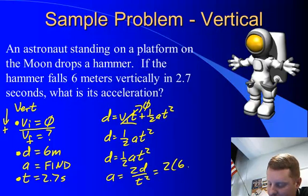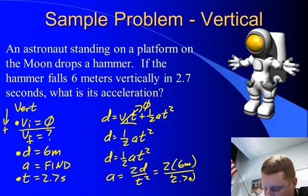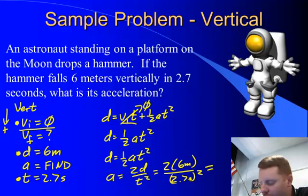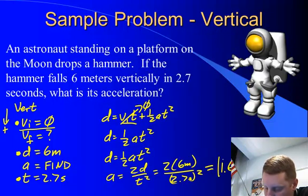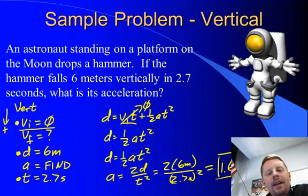2 times 6 meters over T squared is going to be 2.7 seconds squared. Plug that into my calculator and I should come out with something right around 1.6 meters per second squared for my acceleration. The acceleration due to gravity near the surface of the Earth is 9.8 meters per second squared. I know the acceleration due to gravity near the surface of the Moon is about 1 sixth of that. 1.6 is roughly 1 sixth of 9.8, therefore this is probably a pretty reasonable answer.